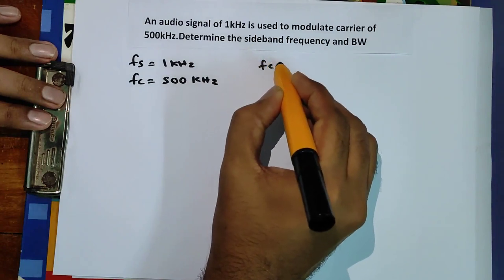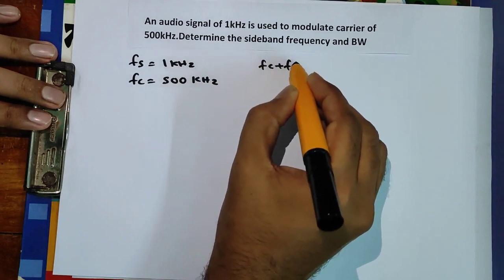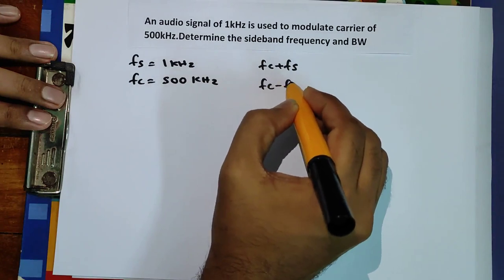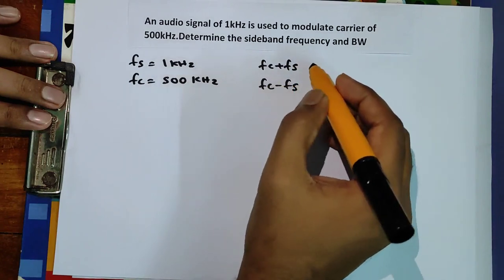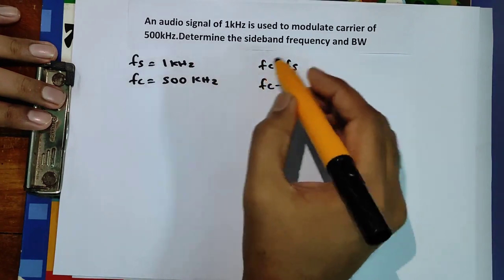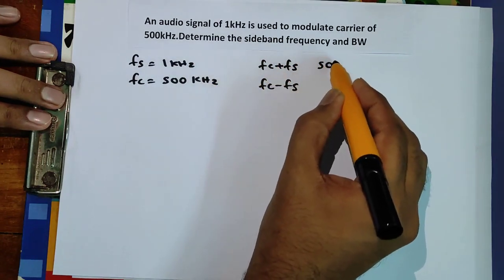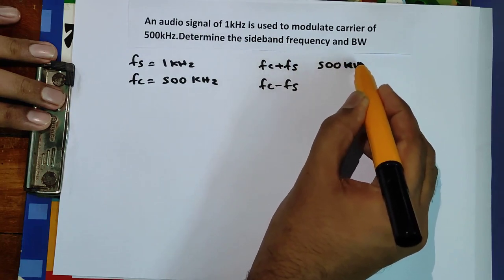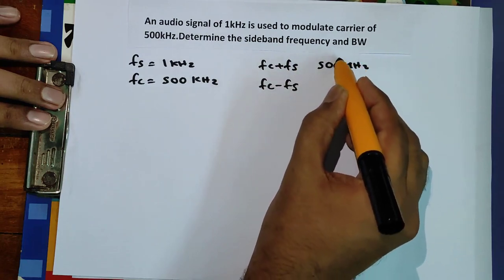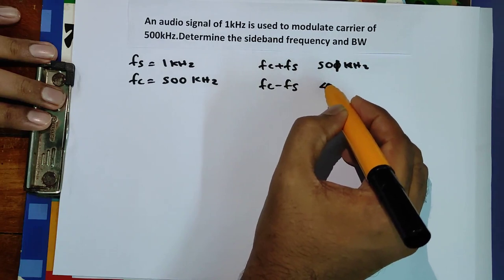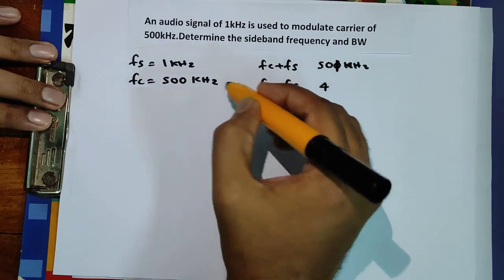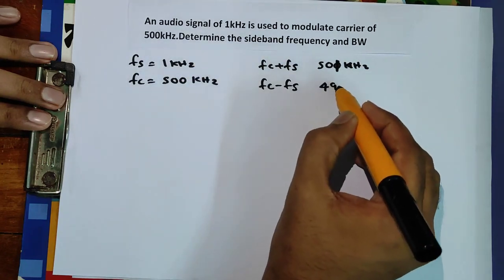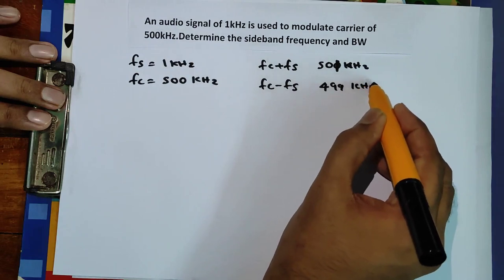The upper sideband frequency is fc + fs, and the lower sideband frequency is fc − fs. So the upper sideband frequency = 500 + 1 = 501 kHz, and the lower sideband frequency = 500 − 1 = 499 kHz.